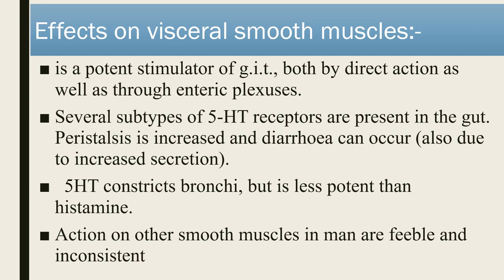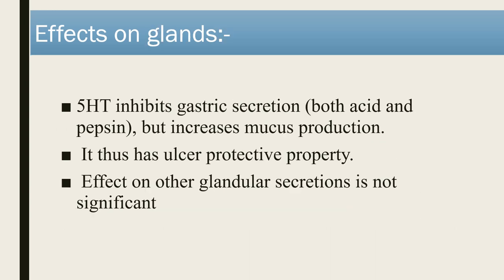Effect of serotonin on visceral smooth muscle: it is a potent stimulator of the GIT both directly and through the enteric plexus. Several subtypes of 5-HT receptors are present in the gut, so increased peristalsis and diarrhea can occur. 5-HT constricts bronchi but is less potent than histamine. Action on other smooth muscle is feeble and inconsistent. On glands, 5-HT inhibits gastric secretion of both acid and pepsin but increases mucus production — it has ulcer protective properties; effect on other glandular secretion is not significant.